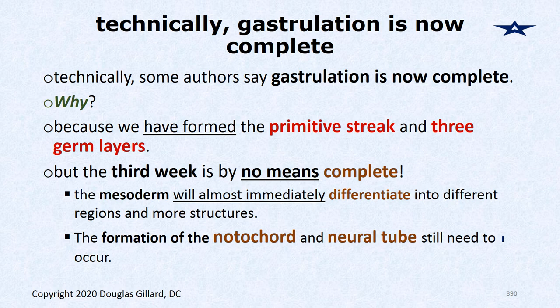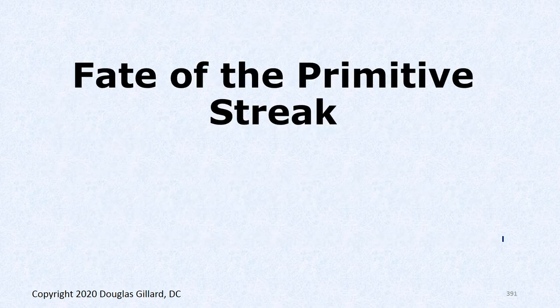The mesoderm will almost immediately differentiate into a bunch of structures because it's mesenchymal and morphs into structures quickly. We haven't made the notochord or neural tube yet. For testing purposes: formation of the notochord and then the neural tube is NOT part of gastrulation. Gastrulation is the formation of the primitive streak, which helps induce the formation of the three germ layers — endoderm, ectoderm, and mesoderm.